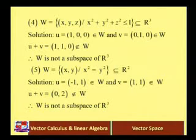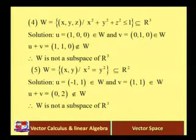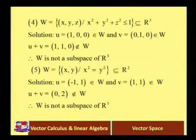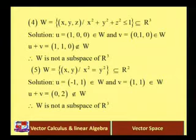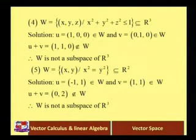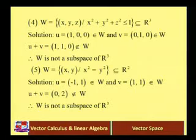0² + 1² + 0² = 1, so V = (0, 1, 0) also satisfies the condition and belongs to W. Now U + V = (1, 1, 0). Clearly that does not belong to W because 1² + 1² + 0² = 2, which is not less than or equal to 1. So U + V does not belong to W, and W is not a subspace of R³.